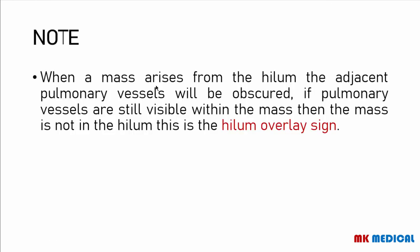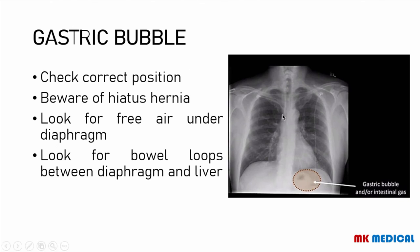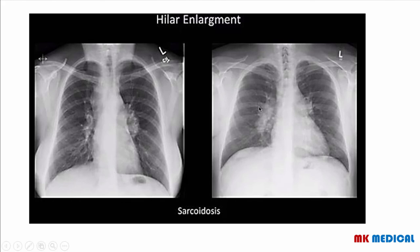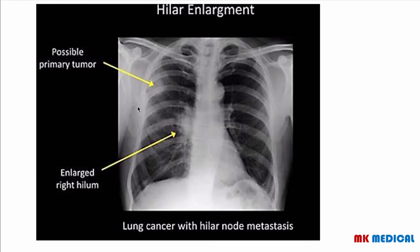Here is enlargement of the right hilum with a possible primary tumor — a person that had lung cancer with hilar node metastasis. When you have a mass arising from the hilum, this mass is going to obscure the adjacent pulmonary vessels. If the pulmonary vessels are still visible within the mass, then the mass is not in the hilum. As long as the mass is in the hilum, the pulmonary vessels will not be visible. You refer to this sign as the hilum overlay sign. On the normal X-ray you can see the vessels very well, but in a pathological process affecting the hilum you're not able to visualize any blood vessels there.